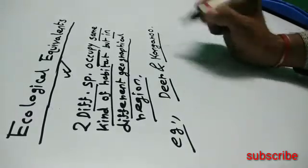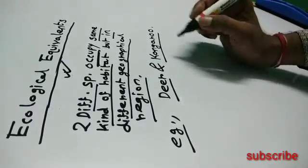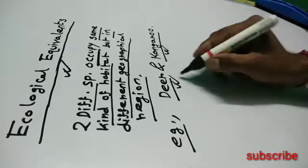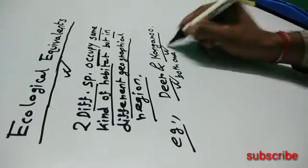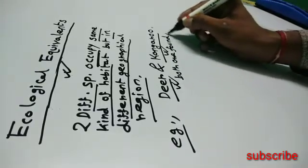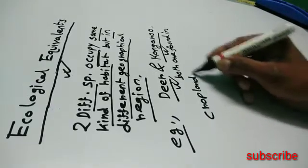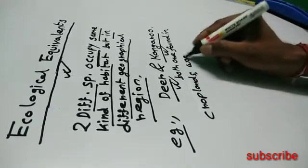Why deer and kangaroo are called the ecological equivalents? Because deer and kangaroo both are found in croplands, woodlands.